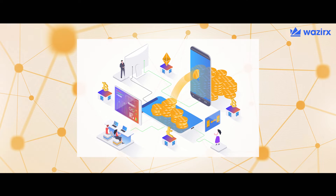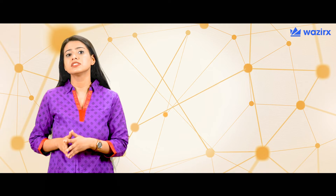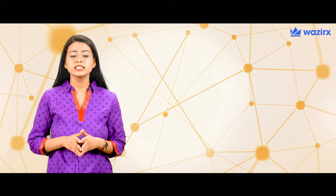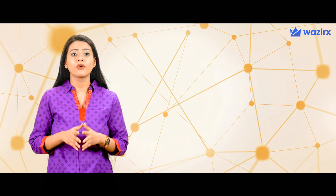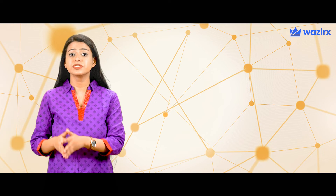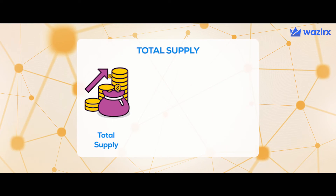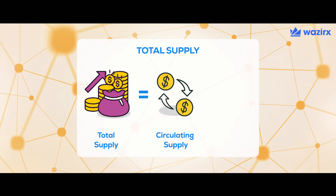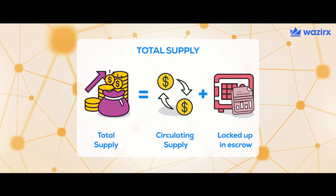The circulating supply refers to the coins that are accessible to the public. The total supply is used to quantify the number of coins in existence — that is, the number of coins that were already issued minus the coins that were burned. The total supply is basically the sum of the circulating supply and the coins that are locked up in escrow.